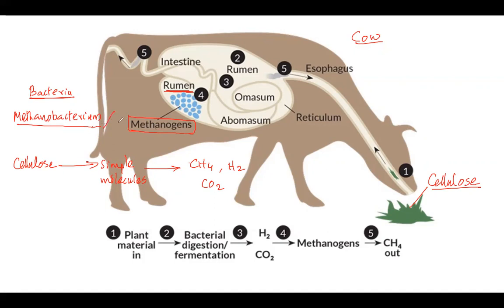These animals eat cellulose and the bacteria helps the animal digest the cellulose into simple molecules. During digestion of cellulose, two or three byproducts are formed - these are gases: CH4 (methane), hydrogen gas, and carbon dioxide. Remember the name of the bacteria - these are known as methanogens.